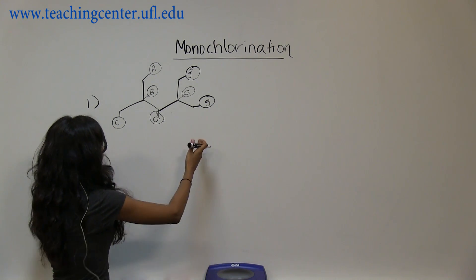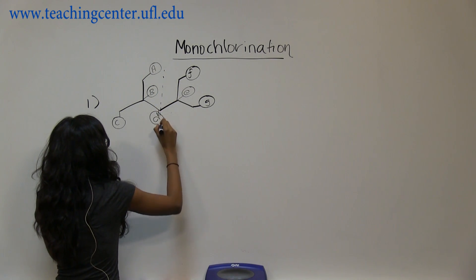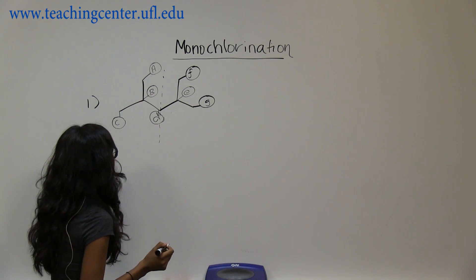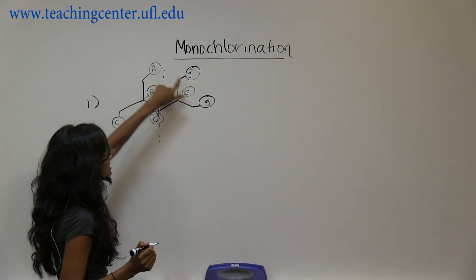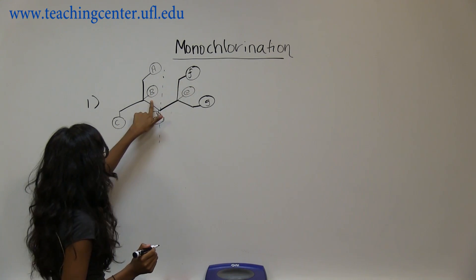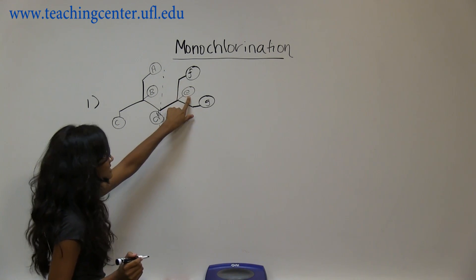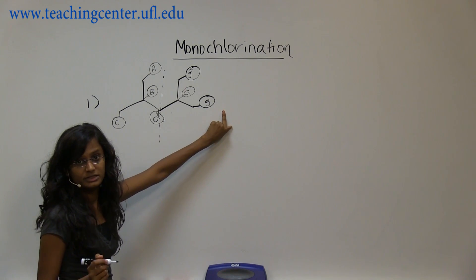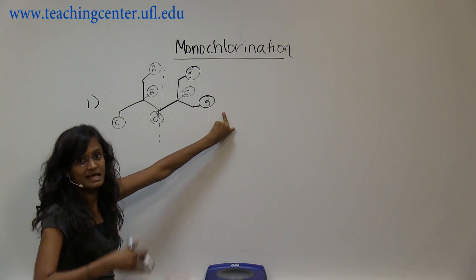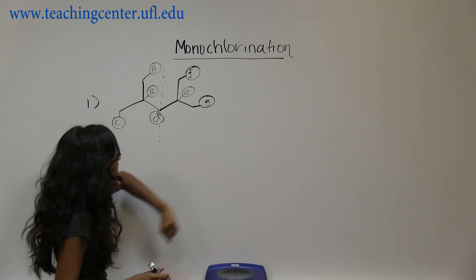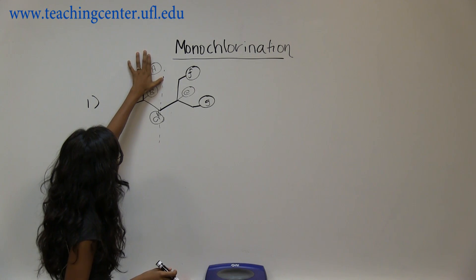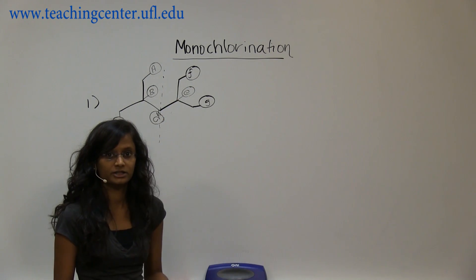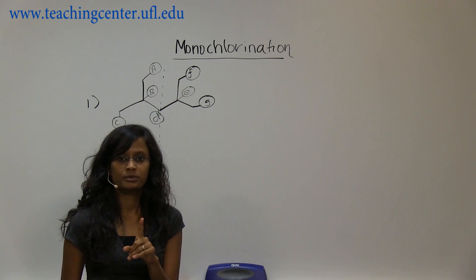The symmetry is right in the middle. That means A is the same as F, B is the same as E, and C is the same as G, because there is an exact symmetry in the middle. So the hydrogens on A would behave similarly to F, and there will only be one product from those positions.